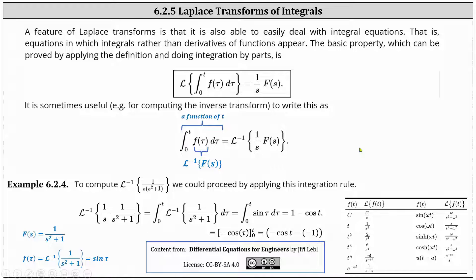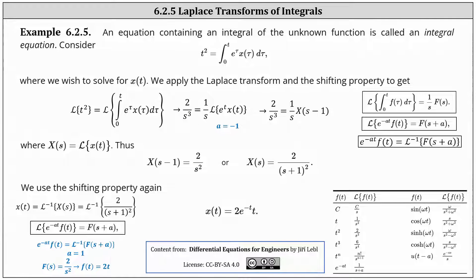And now for the second example. We will use the first form of the equation — the Laplace transform of the integral from zero to t of f(τ) dτ equals one divided by s times F(s) — to solve an integral equation. We want to solve t squared equals the integral from zero to t of e to the τ times x(τ) dτ for x(t). We begin by taking the Laplace transform of both sides.